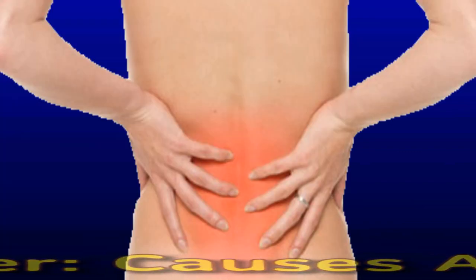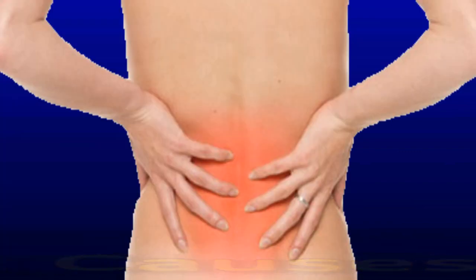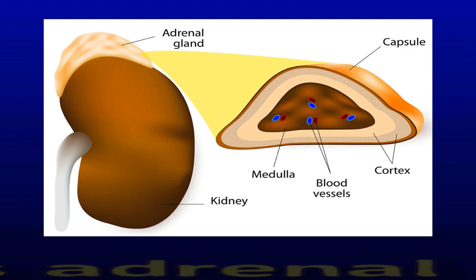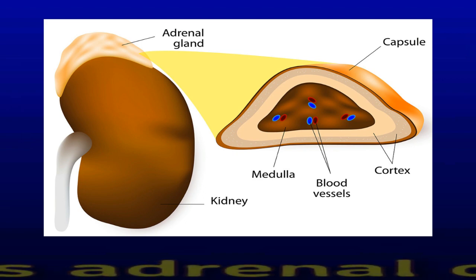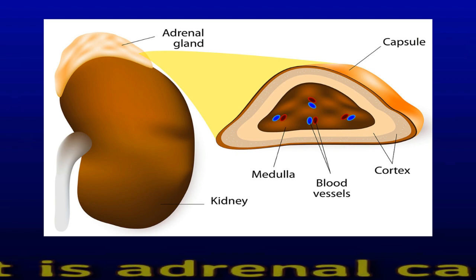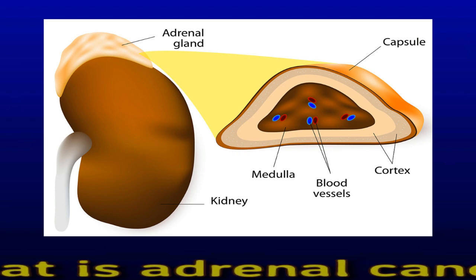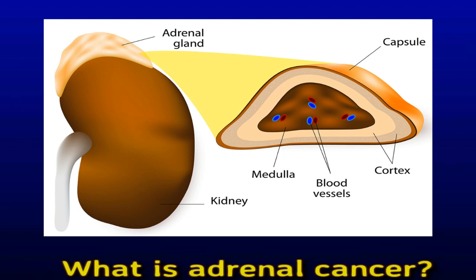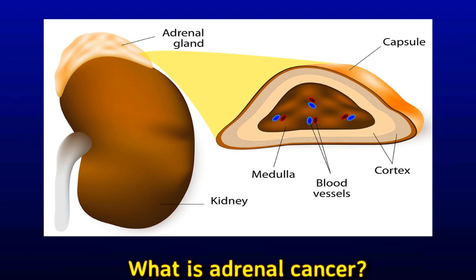What is adrenal cancer? Adrenal cancer is a condition in which abnormal cells form tumors on the adrenal glands. The adrenal glands are small glands that sit on top of each kidney. They play an essential role in the endocrine system by producing cortisol, aldosterone, and sex hormones. Most adrenal tumors affect the adrenal cortex, which is the outside of the adrenal gland.